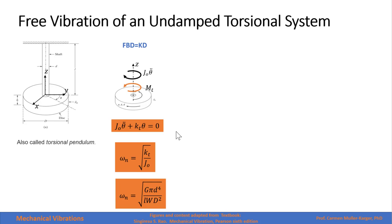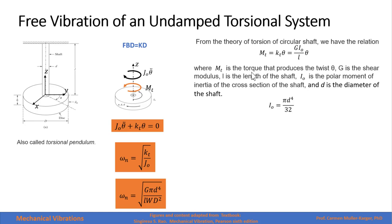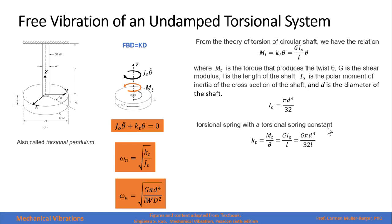The natural frequency is the square root of the coefficient of the rotational displacement over the coefficient that goes with the acceleration. From the theory of torsion, we know that Mt is the torque producing a twist of angle theta, G is the shear modulus, L is the length of the shaft, I_0 is the polar moment of inertia of the cross-section of the shaft, and D is the diameter. The torsional spring constant equals G times I_0 divided by the length.